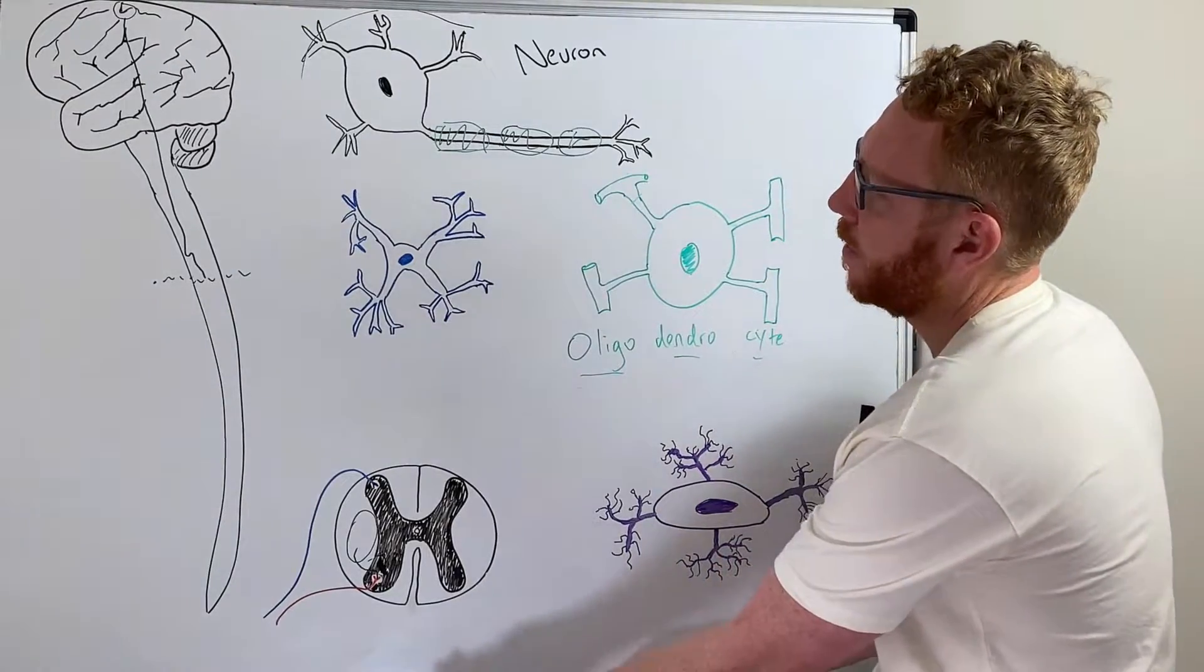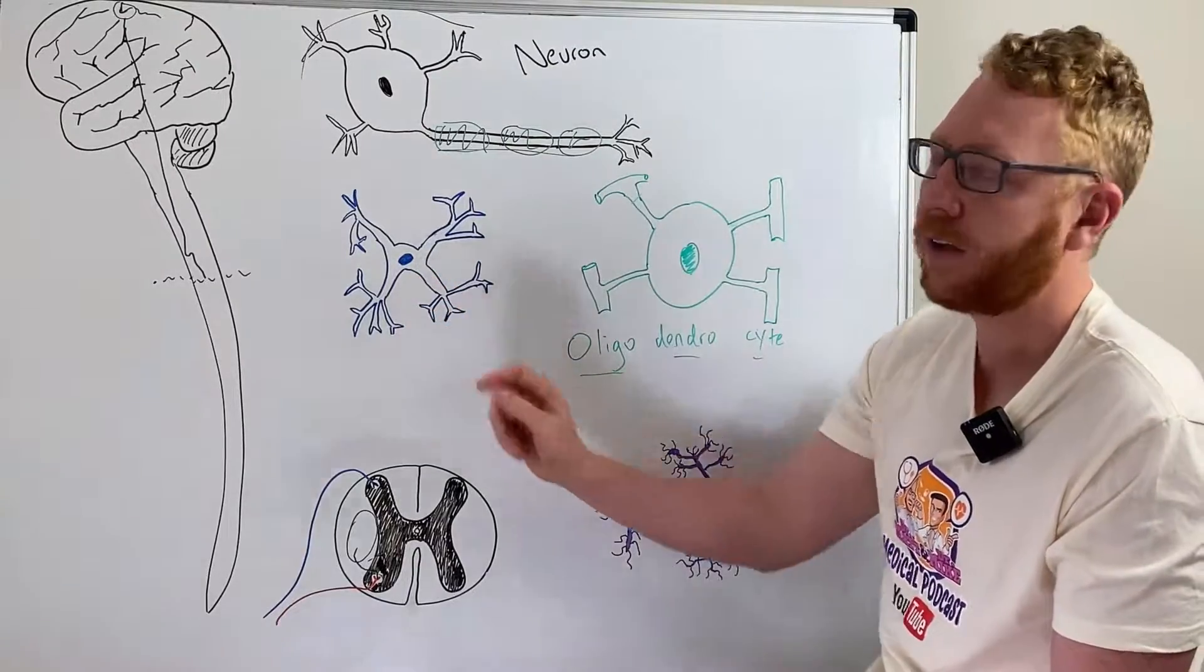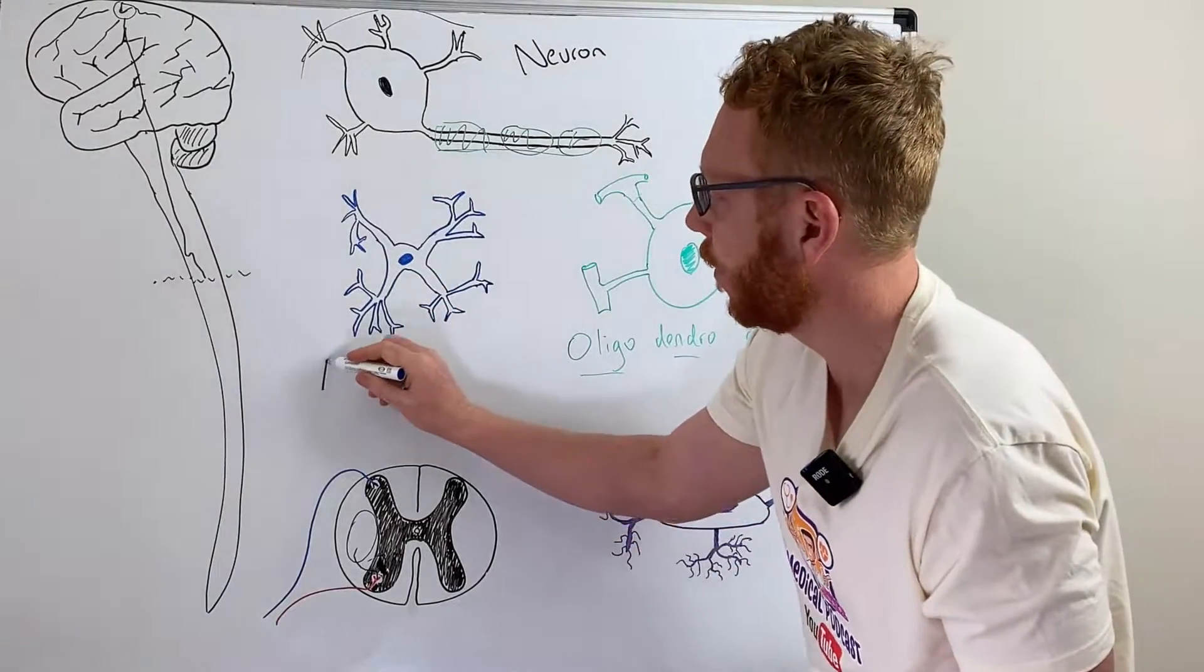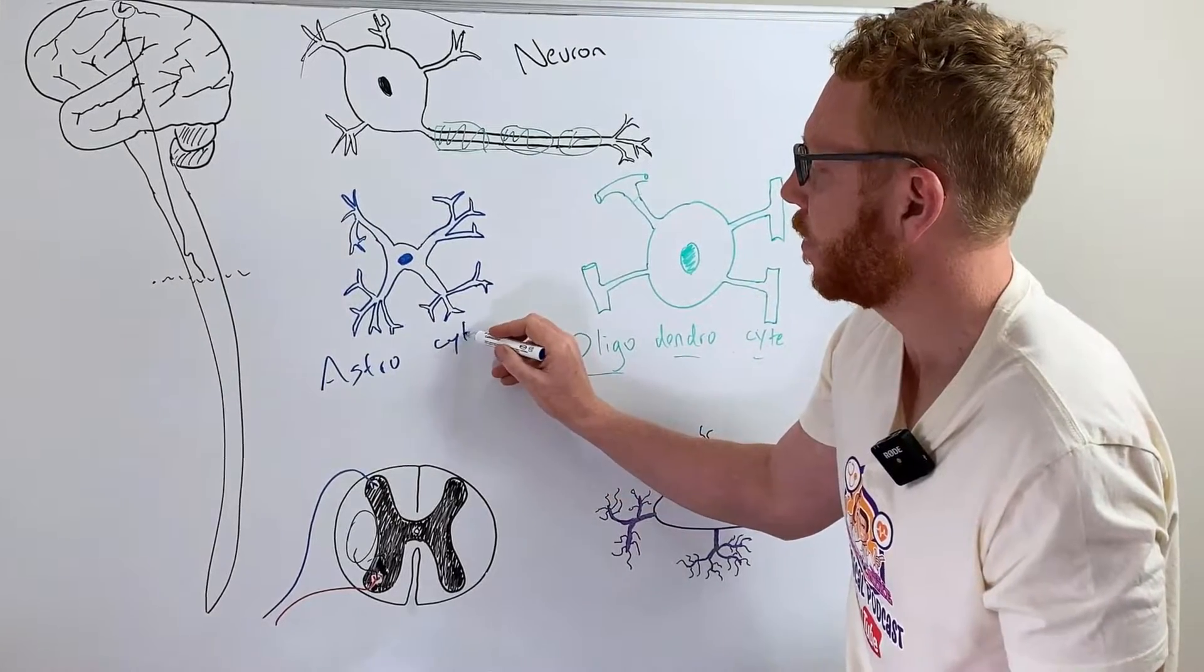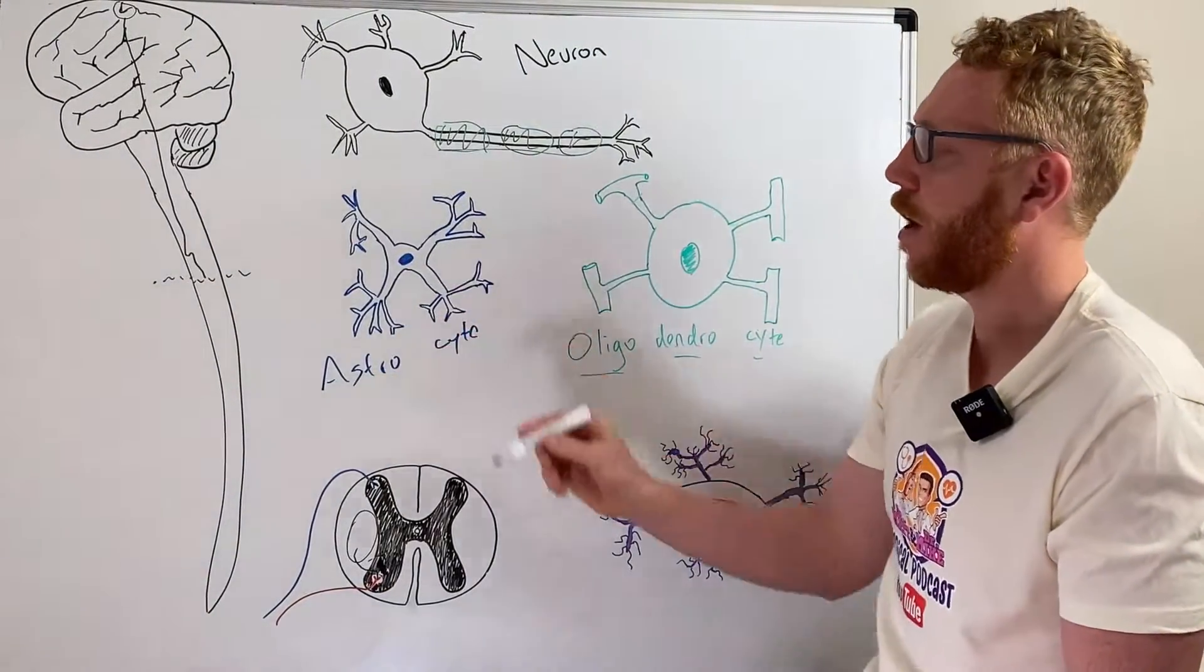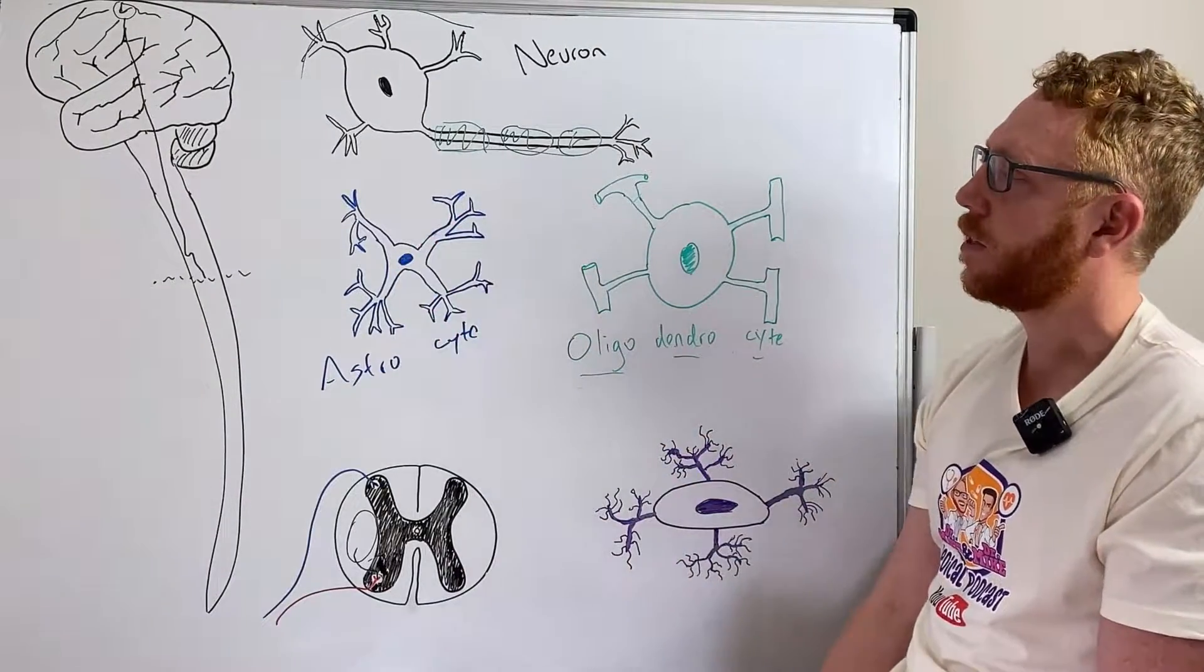Moving on to the next cell—all these cells are called glial cells—this cell here is an astrocyte. Astro means star, cyte means cell, so astrocyte is the star cell. What this particular glial cell does is it really helps to support the neurons in the central nervous system, in the spinal cord.